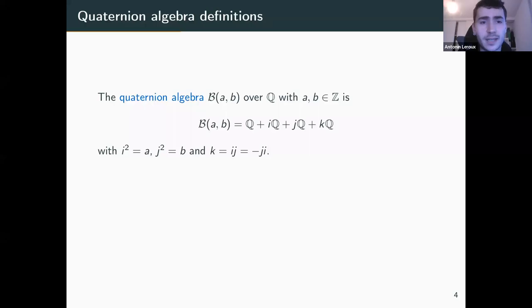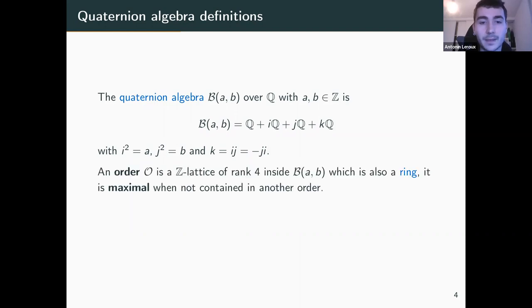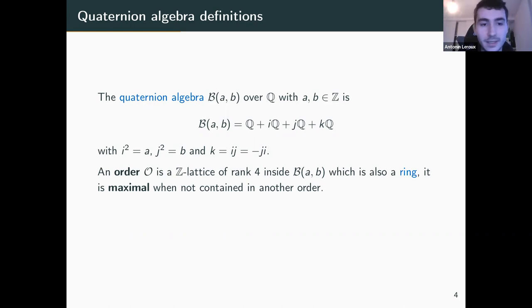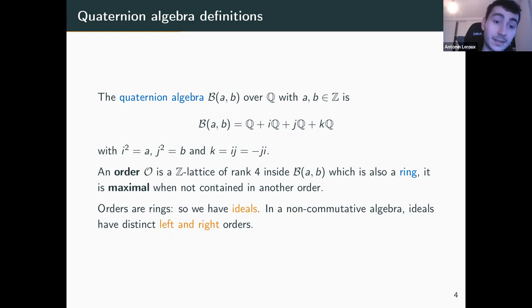We have i, j, and k, where i squared is equal to a, j squared is equal to b, and k is i times j. An order in that case is a Z-lattice of rank four that is also a ring, so it has additional structure. It is maximal when not contained in another order, so it is at the top of this kind of hierarchy given by inclusion. And all those are rings.